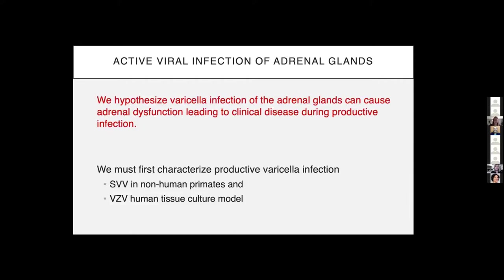Our study aims to expand upon that by looking at primary productive viral infection of the different components of the adrenal glands. We hypothesize that varicella infection of the adrenal glands can cause adrenal dysfunction, leading to clinical disease during productive infection. To evaluate that, we must first categorize the productive varicella infection in SVV in non-human primates and VZV in a human tissue culture model.